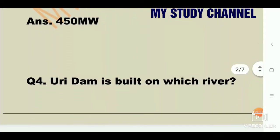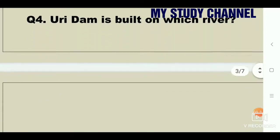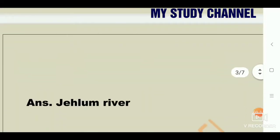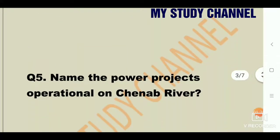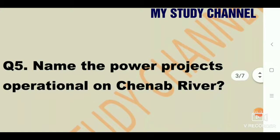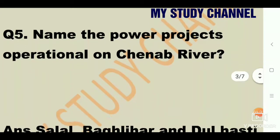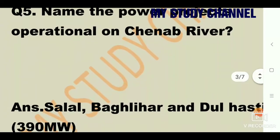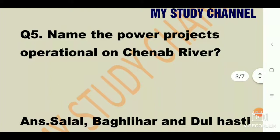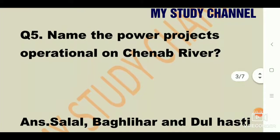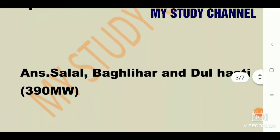Question number 4: Uri Dam is built on which river? The answer is Jhelum River. Next question: Name the power projects operational on Chenab River. The answer is Salal, Baglihar, and Dulhasti.